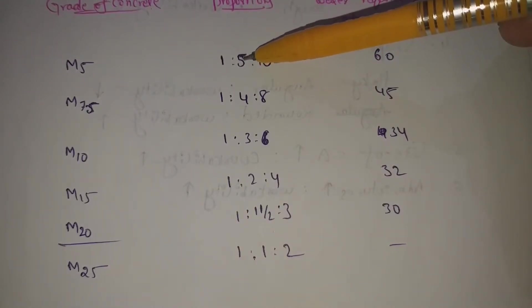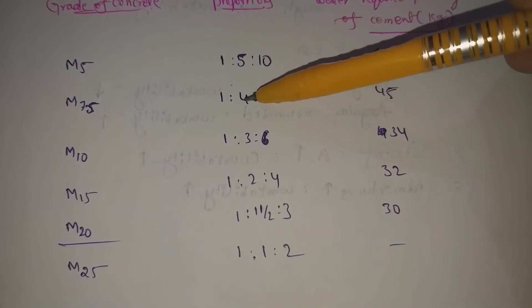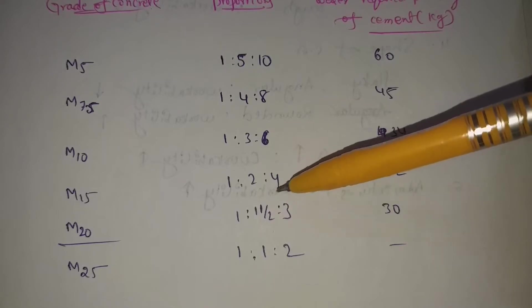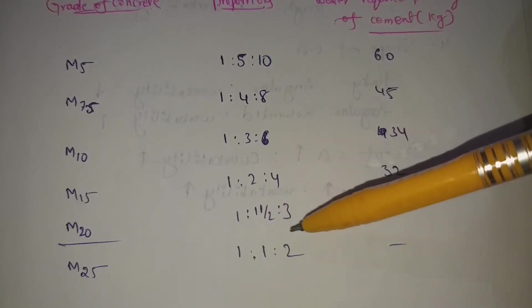So, first, here, 5, 2, 10, 4, 2, 8, 3, 6, 2, 4, 1.5, and 1.5, 3.